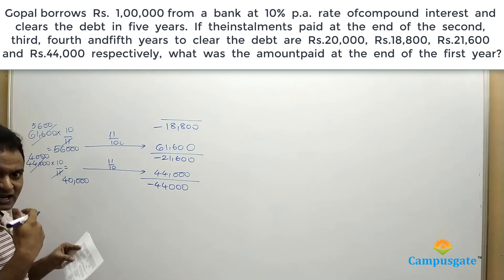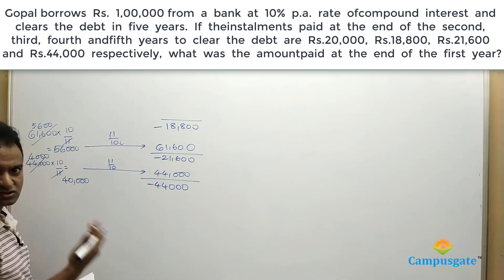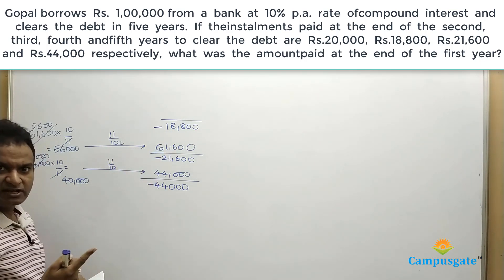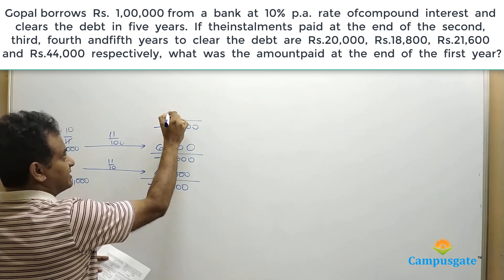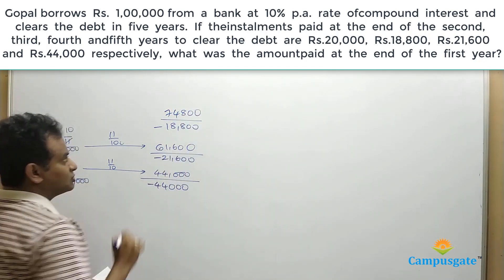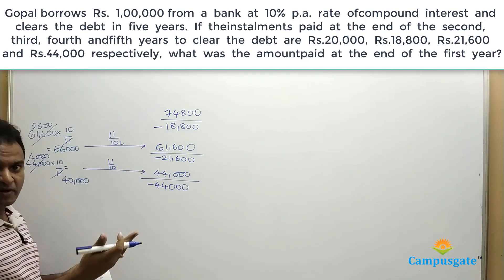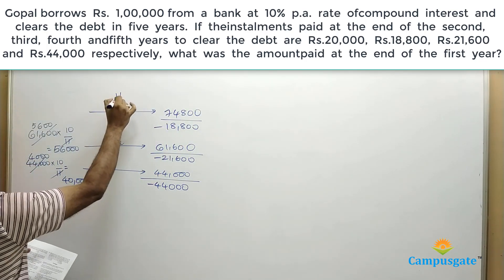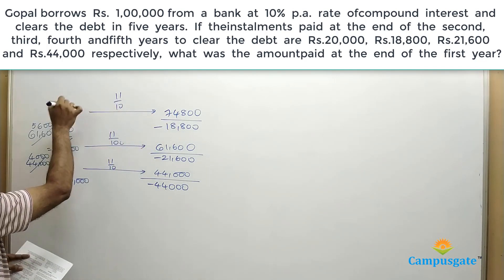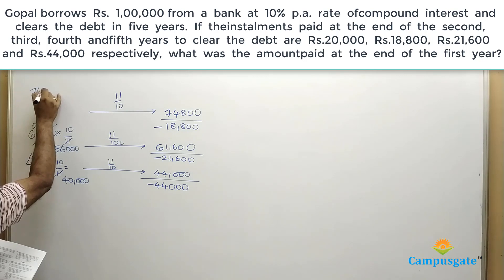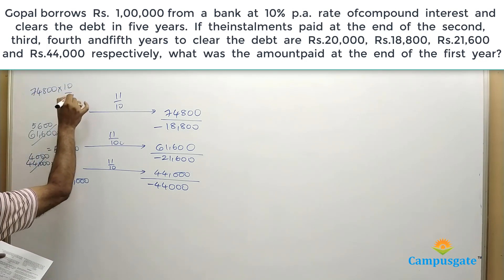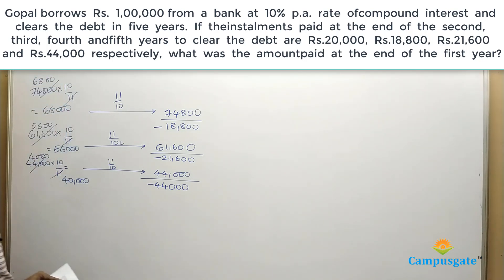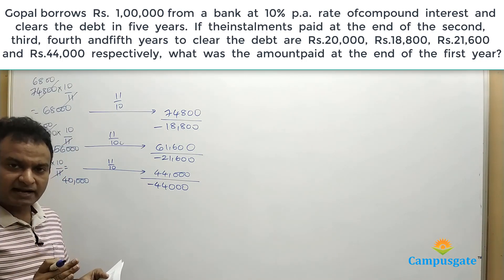After paying 18,800, that principal became 56,000. So the total amount at the end of the third year is 56,000 plus 18,800, which equals 74,800. This is the total amount at the end of the third year that has to be paid to clear the debt. To find the principal at the beginning of the third year, we multiply 74,800 by 10 by 11, which gives 68,000.